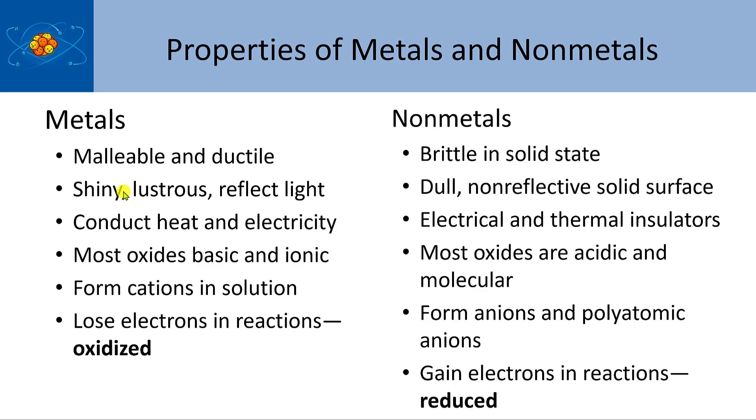Okay, so last trend has to do with metals and non-metals. And just a quick review. Metals are malleable and ductile. So malleable means you could make a thin foil out of it. Ductile just means you could stretch it into a wire. They're shiny or lustrous, they reflect light. They conduct electricity and heat very well. Most oxides are basic and ionic and form cations in solution, lose electrons in reactions. They are generally oxidized. So the properties of metals in general.